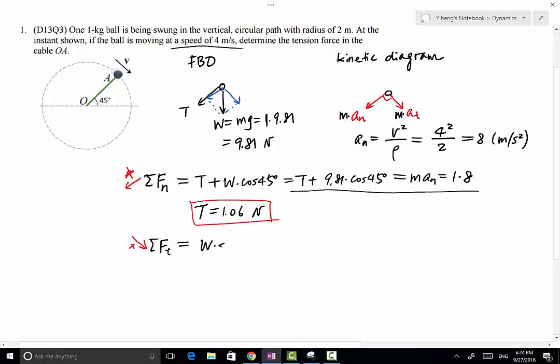So weight times sine 45 degree equals to 9.81 times sine 45 degree. And that equals to Mat which equals to 1 times At. So we can easily evaluate At from this right here. Which is going to be about 6.94 meter per second squared.